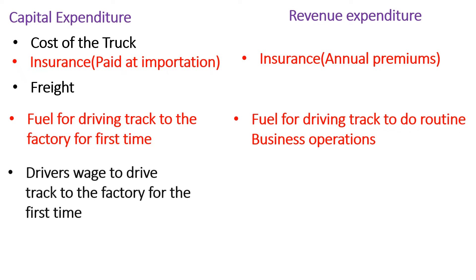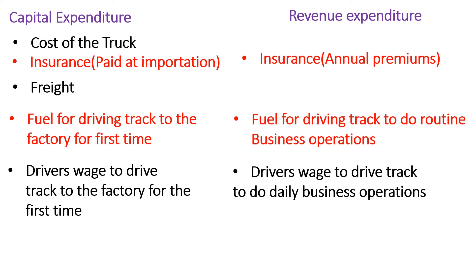The salary or wage I pay the driver when he is transporting that truck from the port to my factory for the first time is a capital expenditure — that cost will be tagged to the overall cost of the truck. That wage is different from the salaries I'll be paying the driver to drive the truck around distributing products in the normal day-to-day running of the business. That kind of salary is categorized as a revenue expenditure — it is an expenditure incurred so that my business generates money.